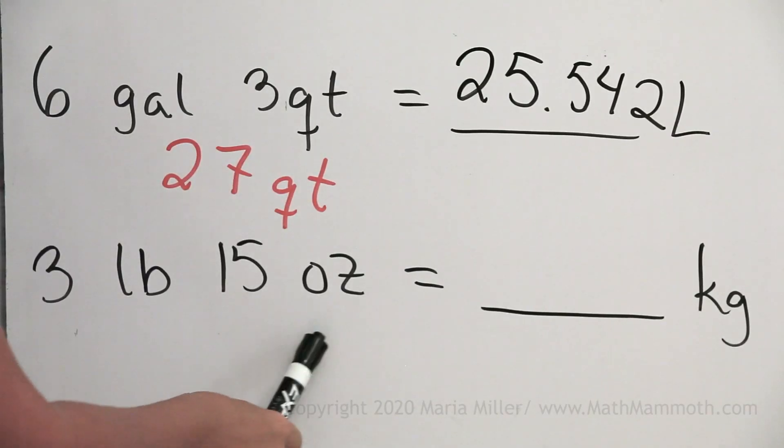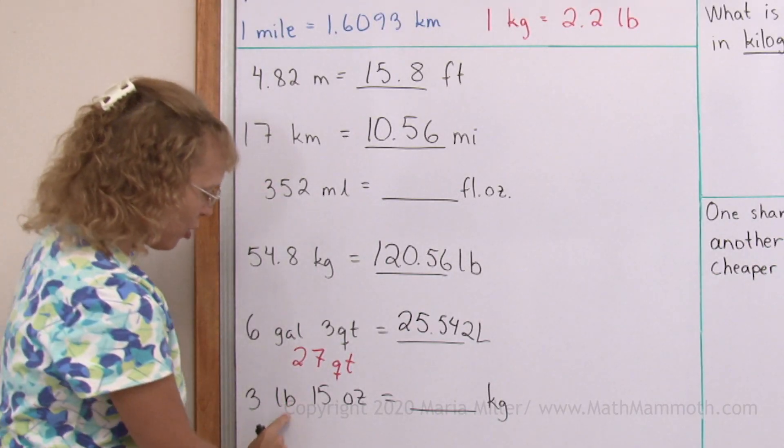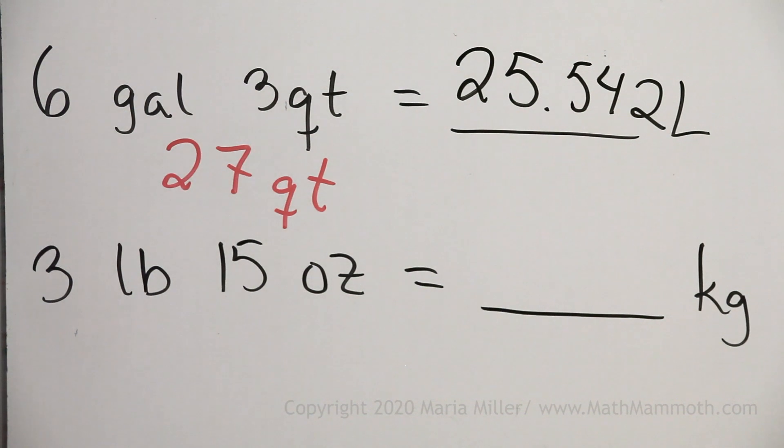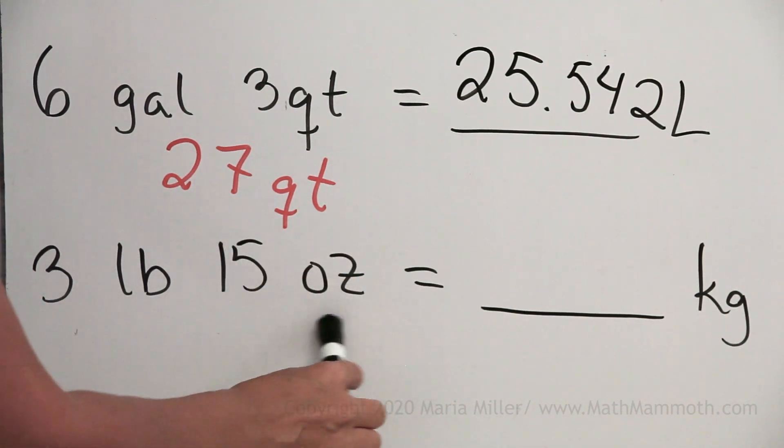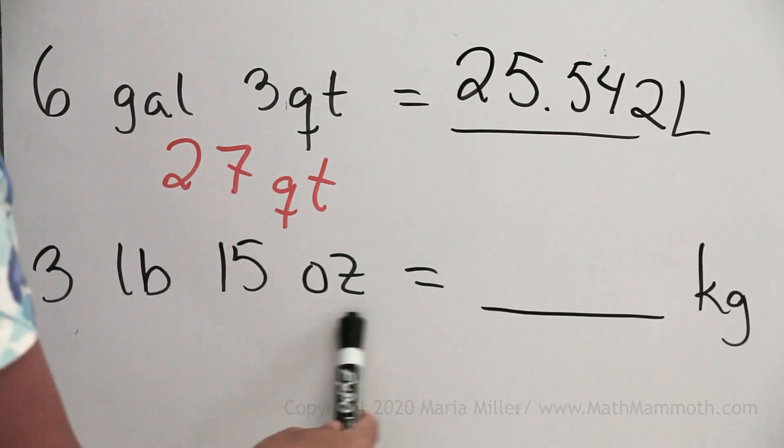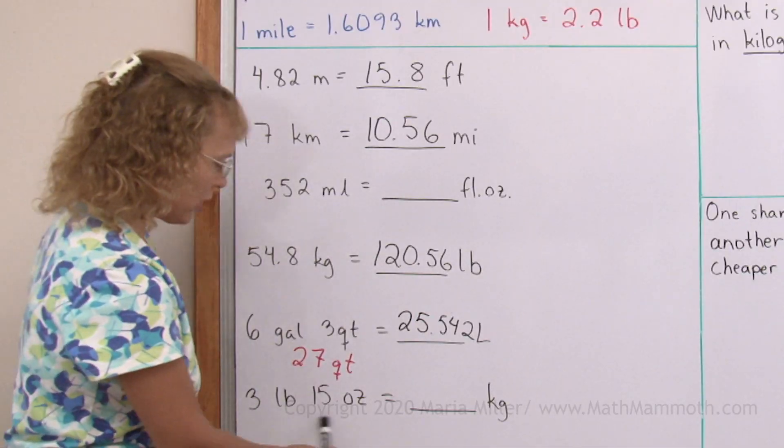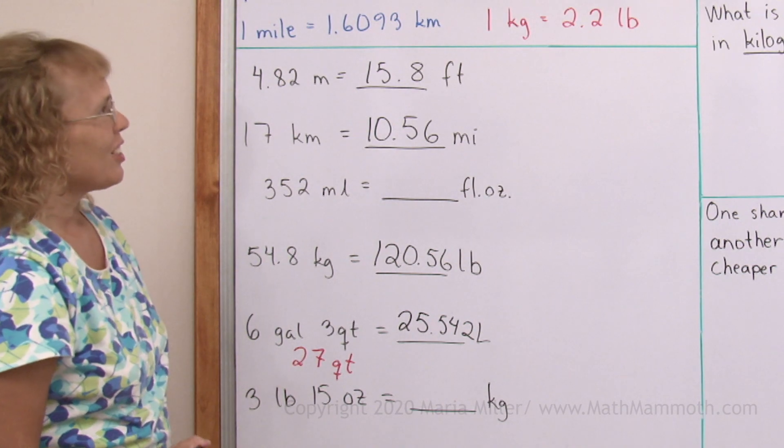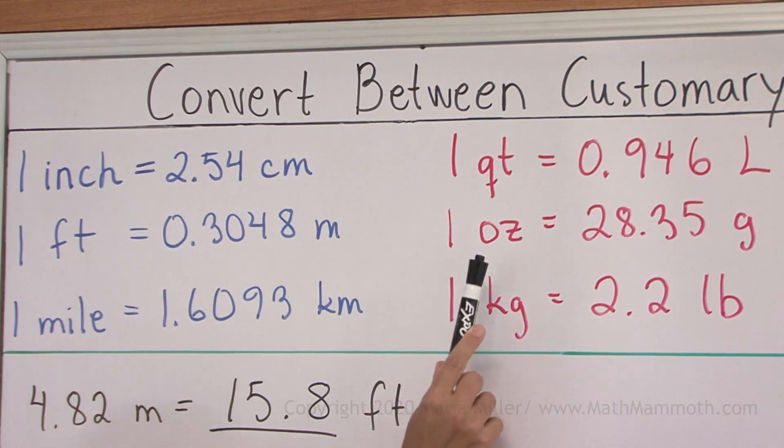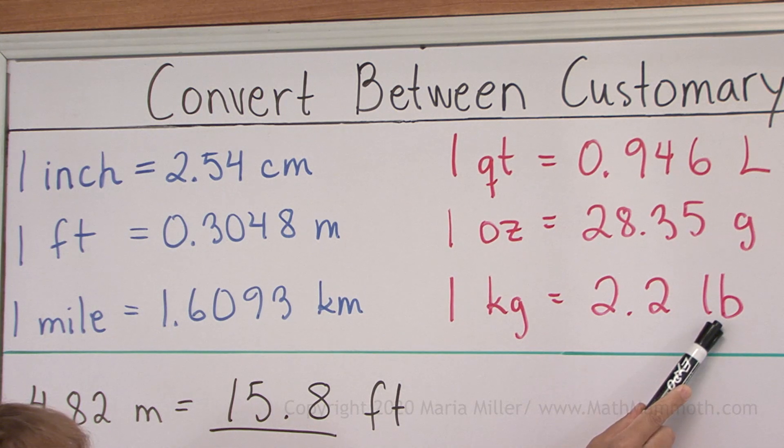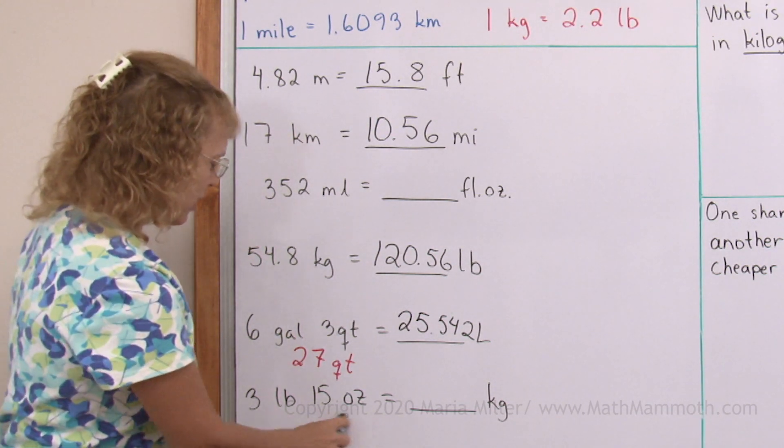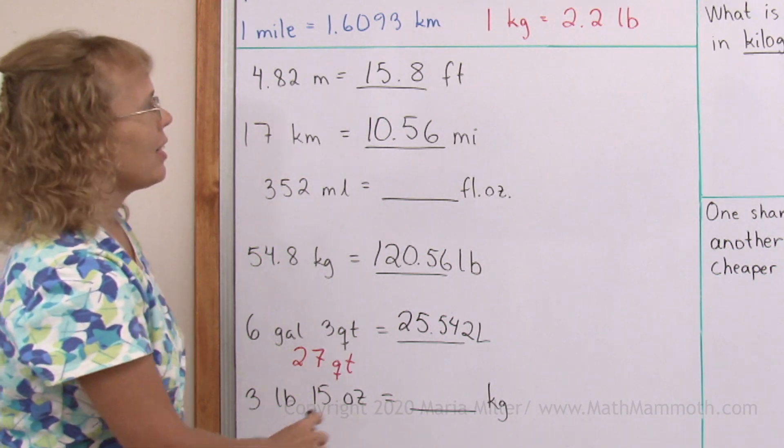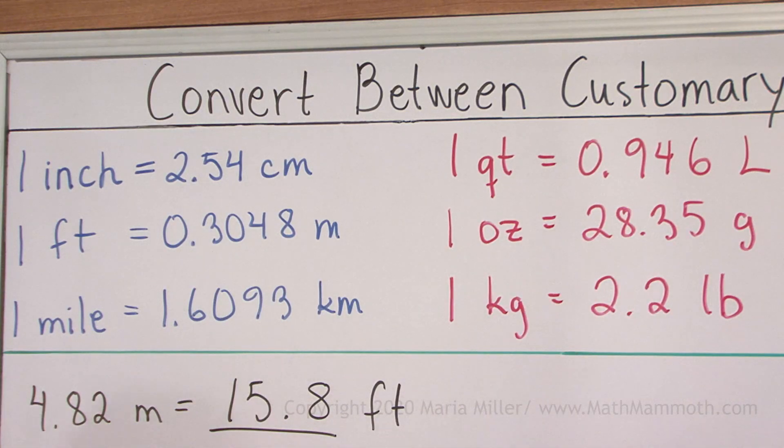Then three pounds, 15 ounces into kilograms. Again, we have here two units, pounds and ounces. So we either need to change this separately into kilograms and this separately into kilograms, or change this into so many pounds first, or change this into so many ounces first. So there's lots to think about. I have the conversion factor for both ounces and pounds. So there's many ways to do this now. Let me try if we will change this into ounces first. And then since one ounce is this many grams, then we can multiply by that.